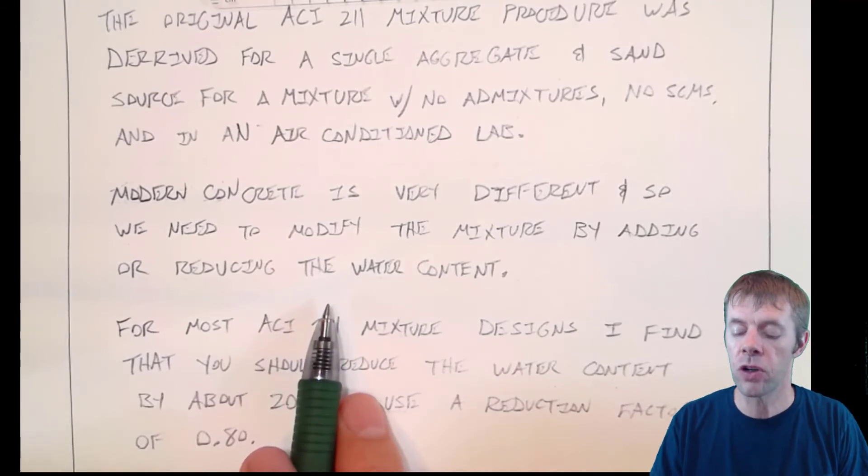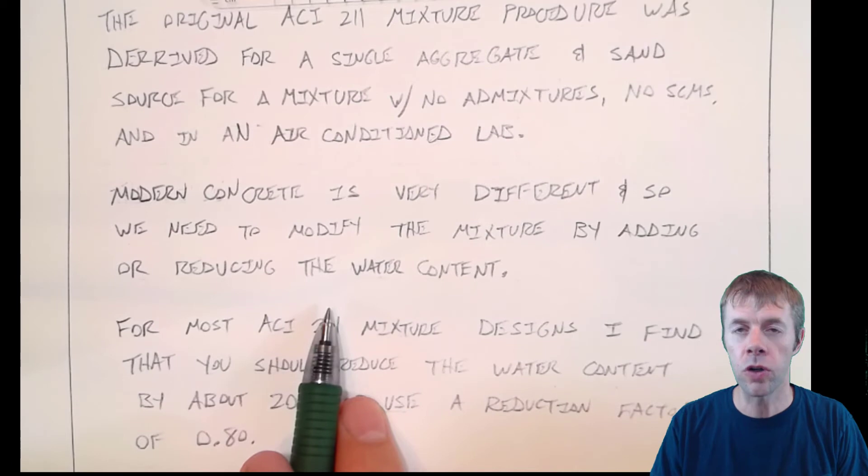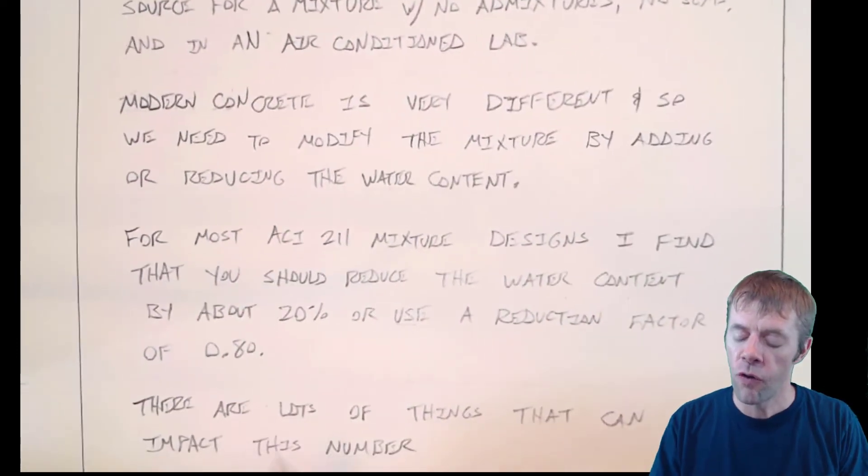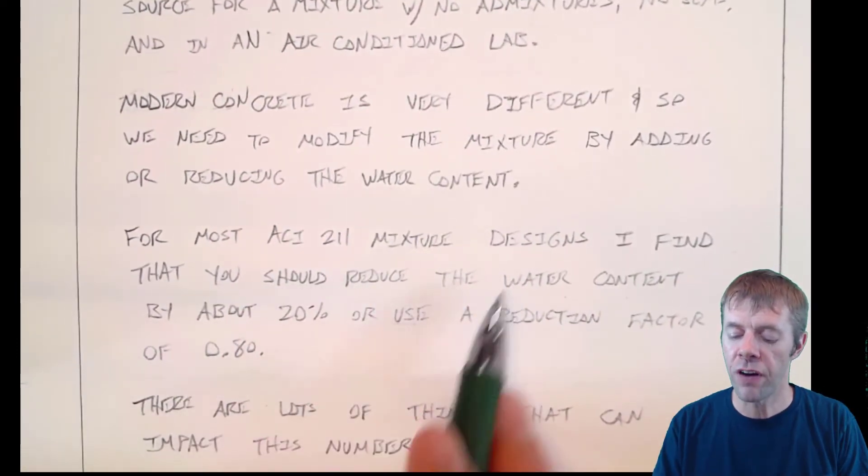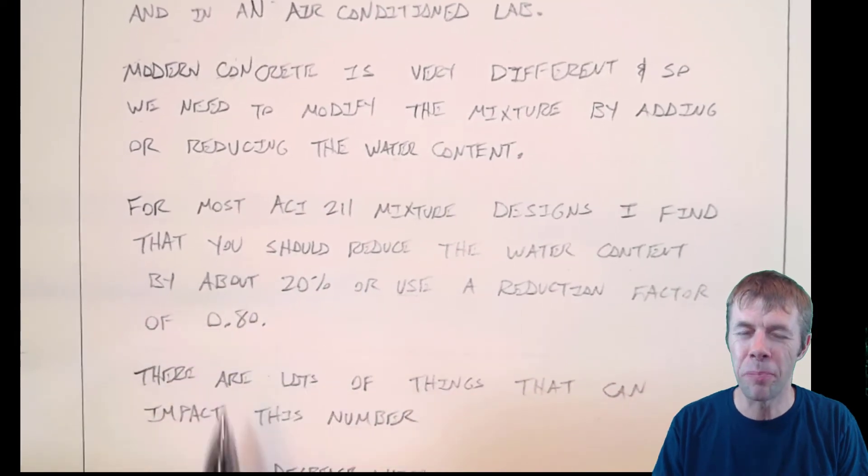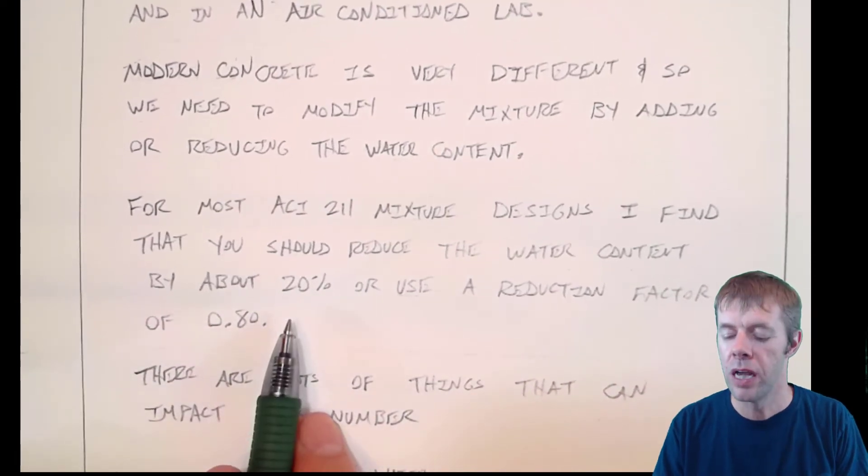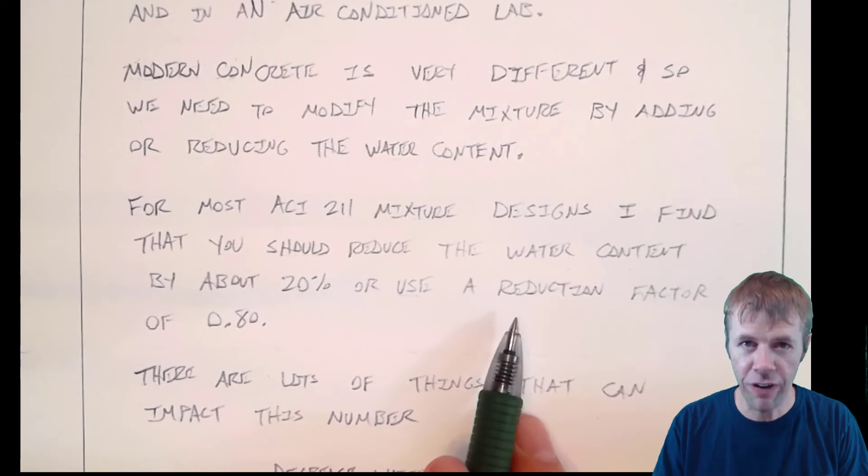modify this process by adding or reducing the water content. For example, if our mixture, if our concrete materials are very different than the original materials investigated, we're gonna have to make changes. For most ACI-211 mixture designs, I find that you should reduce the water content by about 20%.